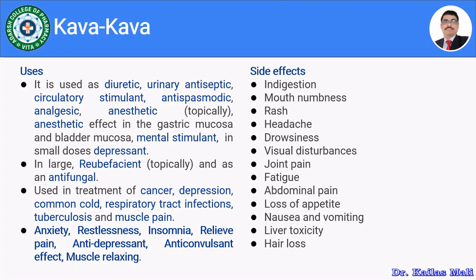Furthermore, kawakawa might be useful in the treatment of cancer, depression, common cold, respiratory tract infections, tuberculosis, and muscle pain. Broadly, kawakawa is used to treat anxiety, restlessness, and insomnia, to relieve pain, and it acts as an antidepressant, anticonvulsant, and muscle relaxant. These are the health benefits and uses of kawakawa.